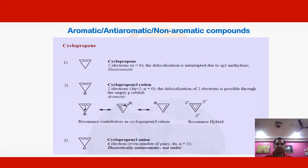Now let us take examples to identify whether a compound is aromatic, anti-aromatic, or non-aromatic. First, we take the example of cyclopropenyl. This cyclic ring has only one pi bond, meaning two pi electrons, which should follow Hückel's rule of 4n+2. However, there is no continuous pi electron cloud in the cyclic ring because one sp3 hybridized orbital is present, interrupting the conjugation. Therefore this is a non-aromatic compound.